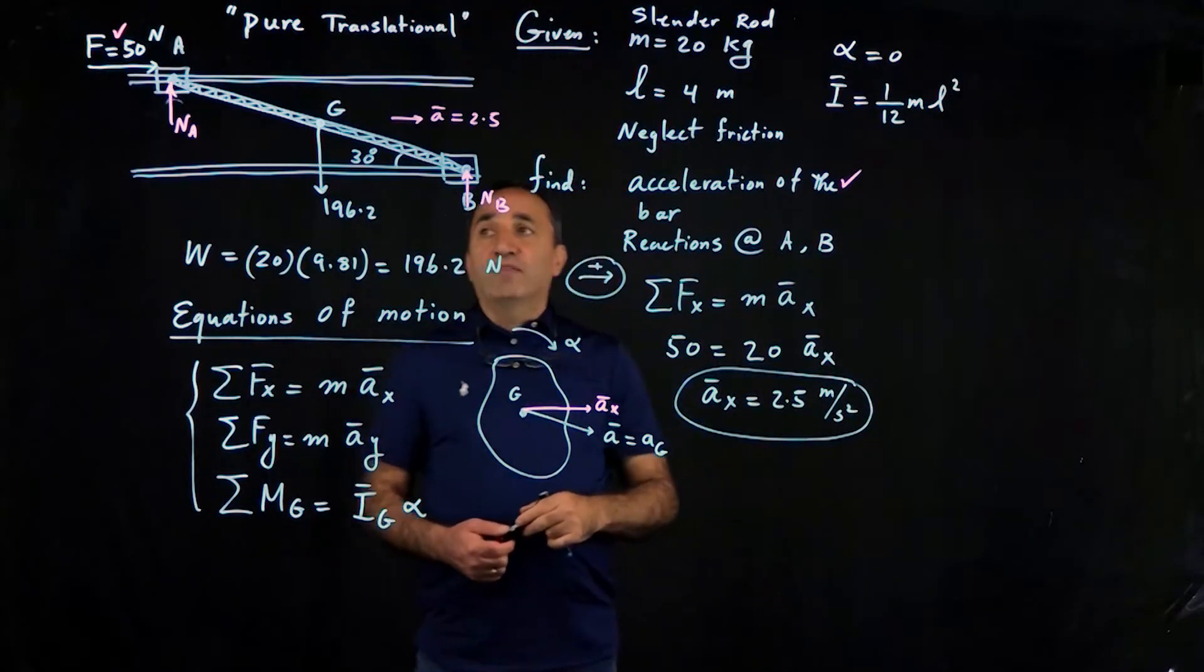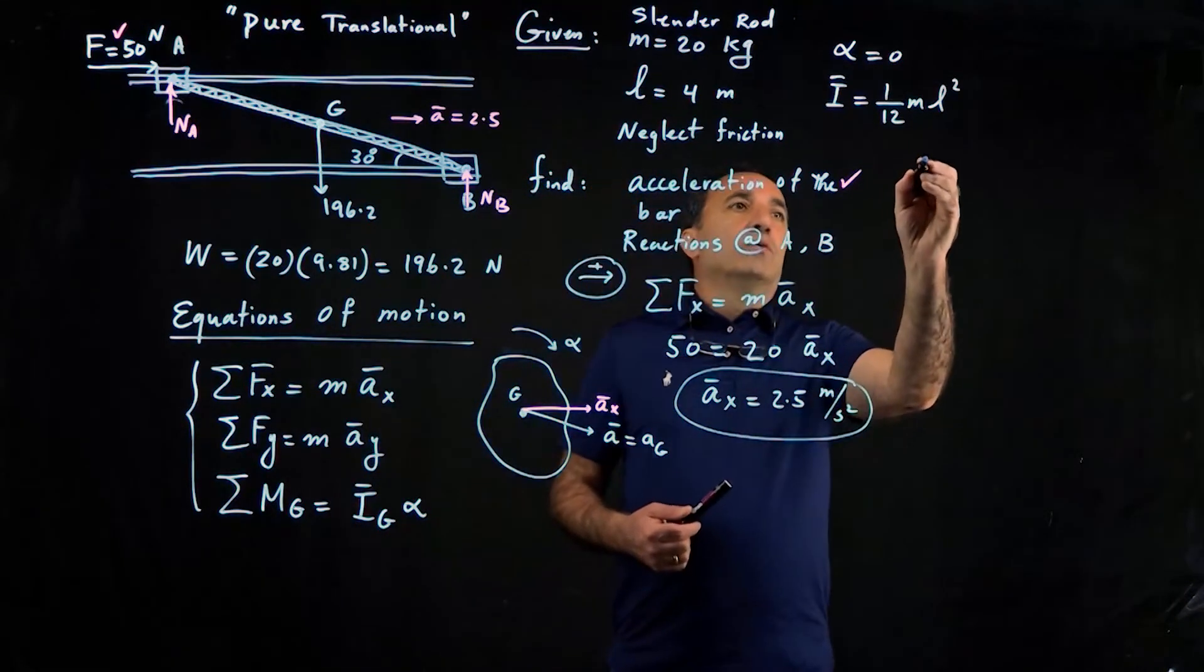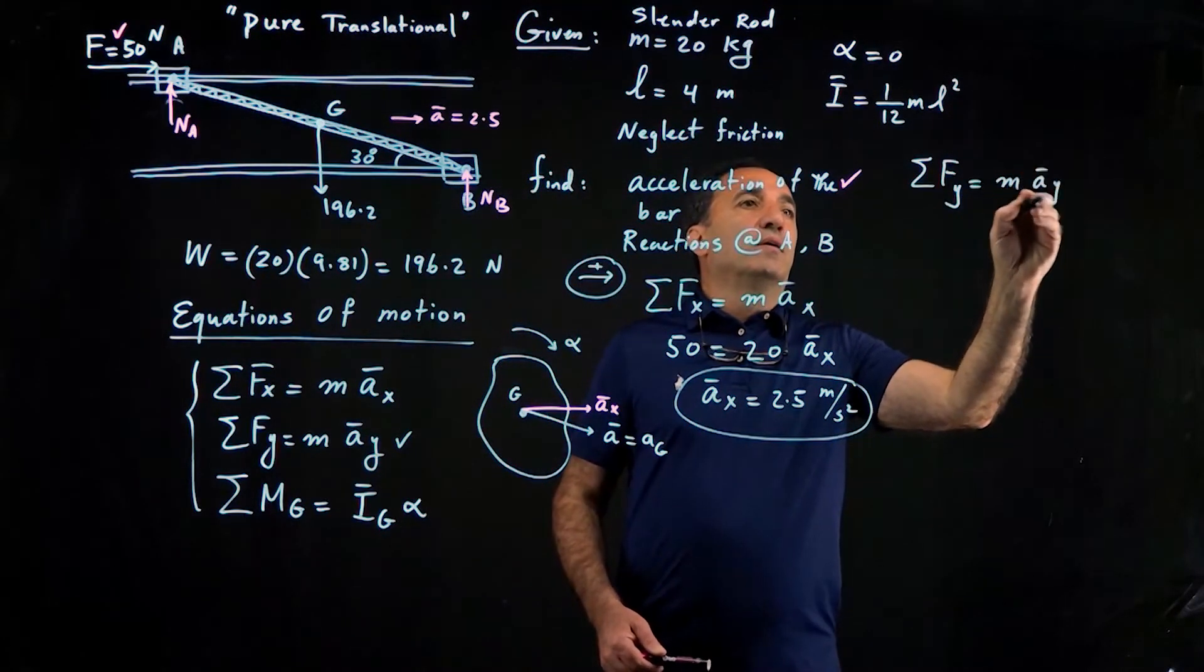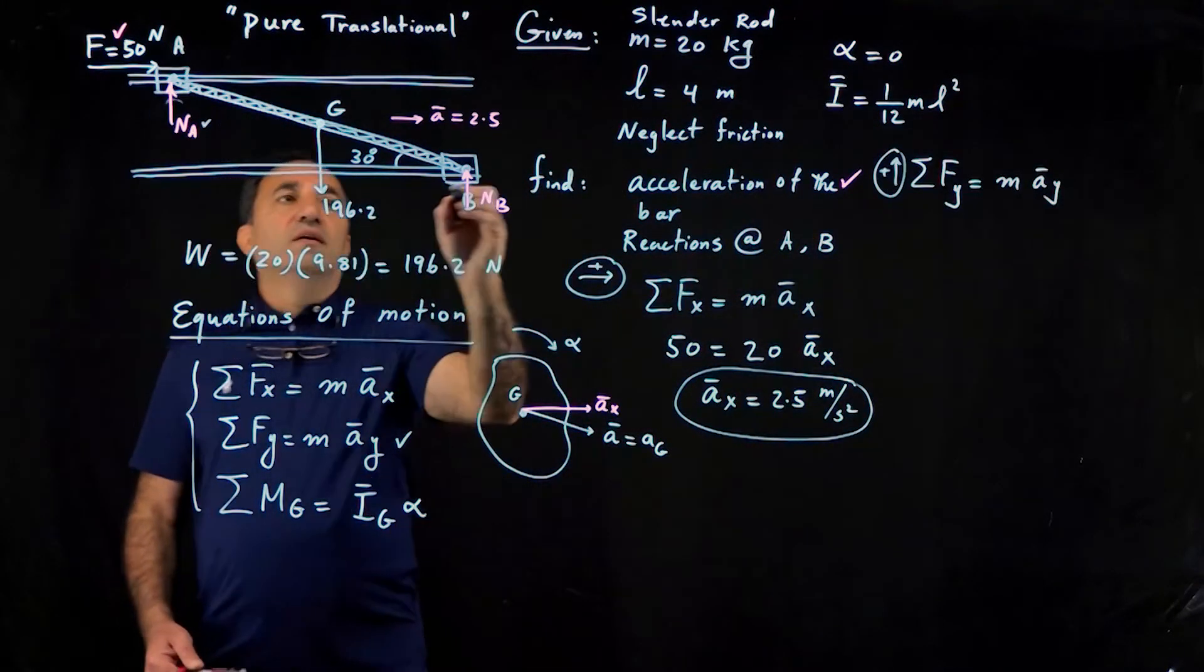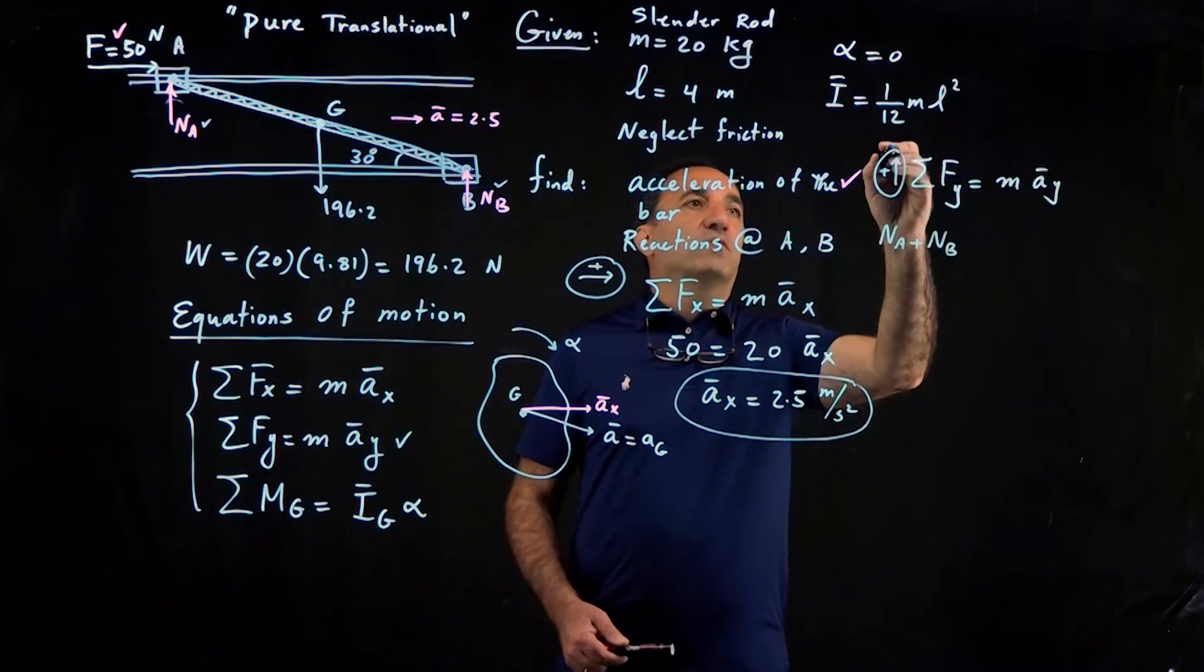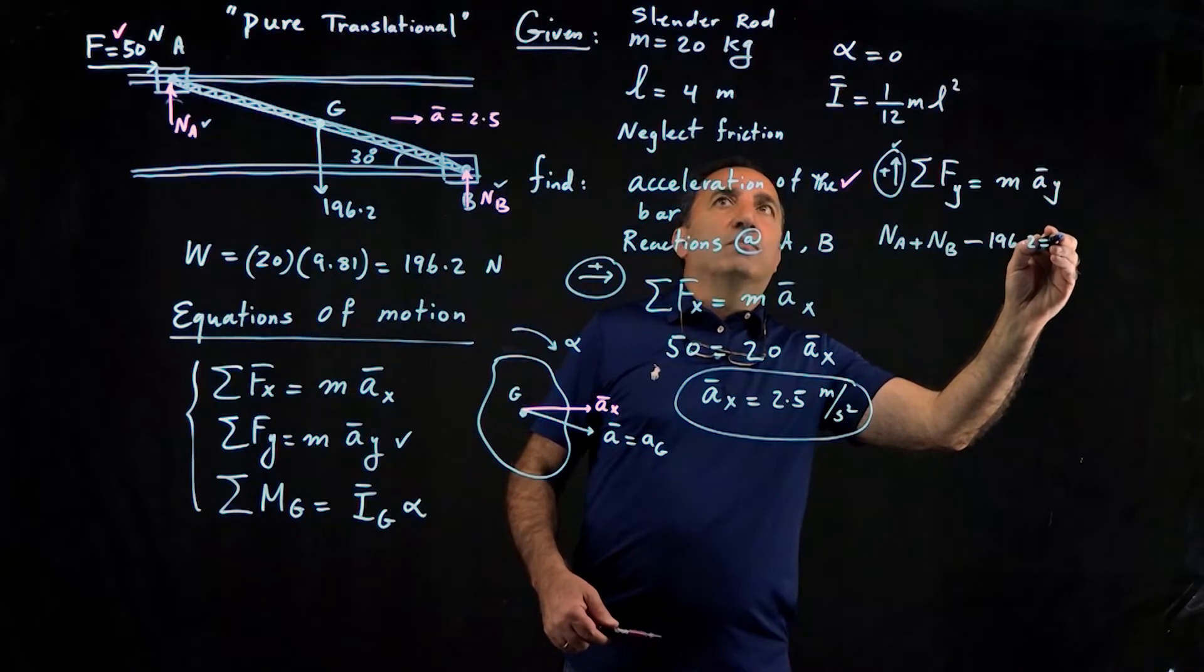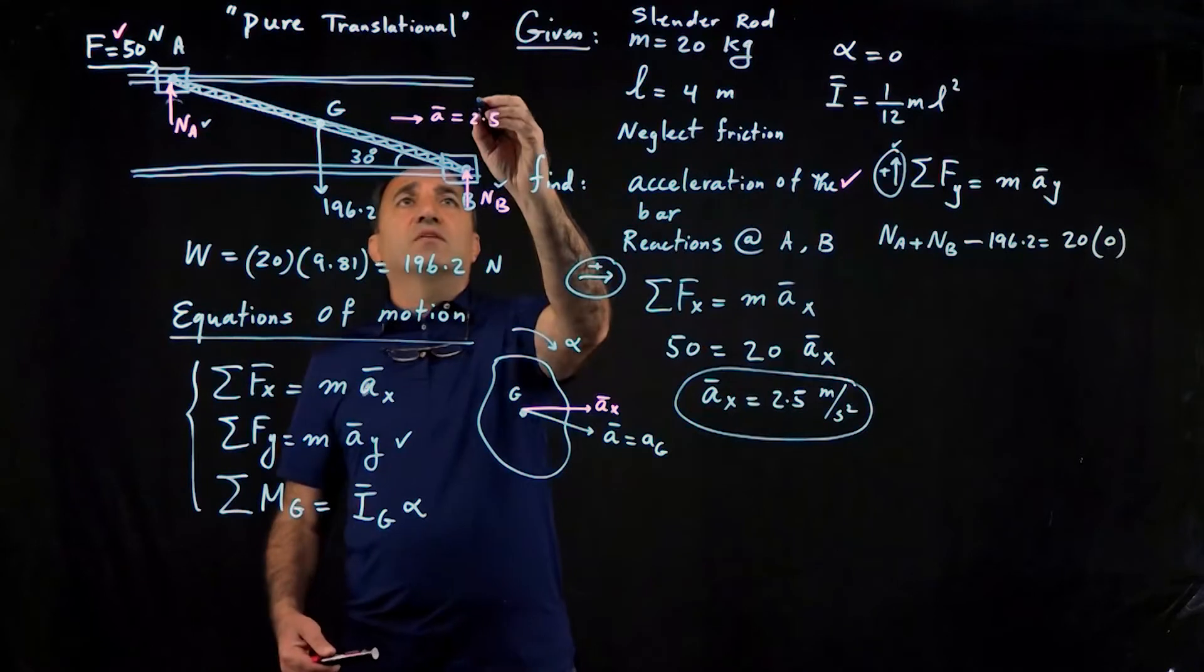Now, we also have to find na and nb, so we can apply our other equations. We'll use this equation now: sum of the forces in y equal ma-bar y. Now, if we look at our free body diagram in the y direction, we have na and nb, both going in the positive direction based on our reference here. Then we have the weight. And of course, the mass is 20 kilograms. There is no acceleration in the y direction. This guy is only accelerating in the x direction.